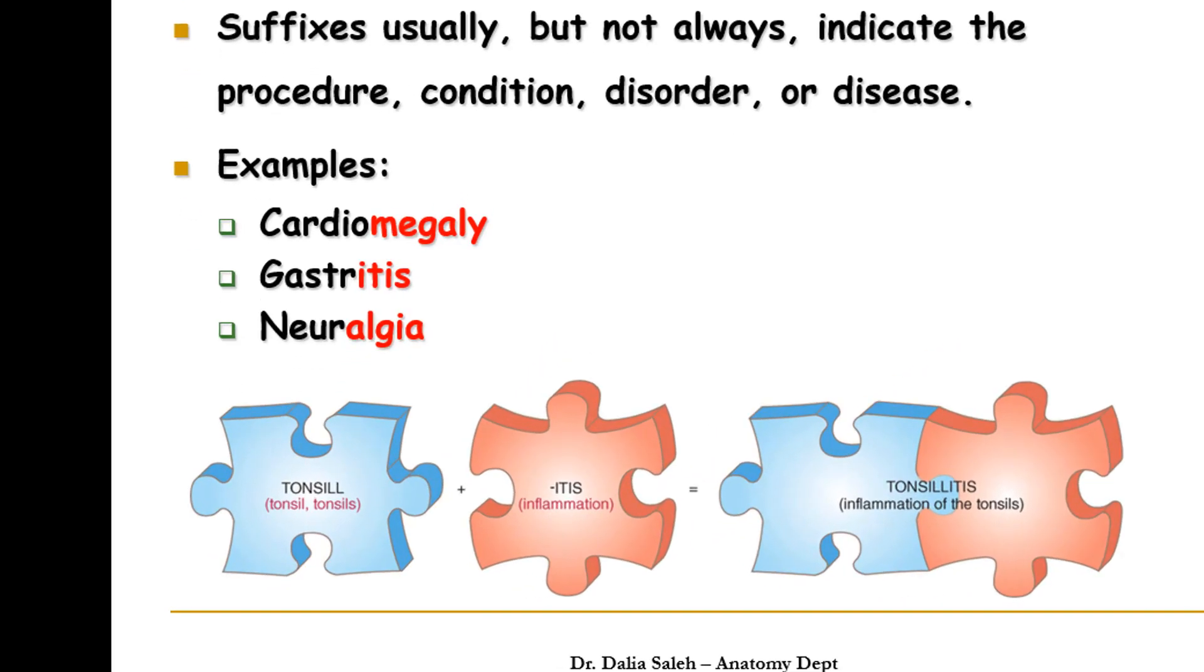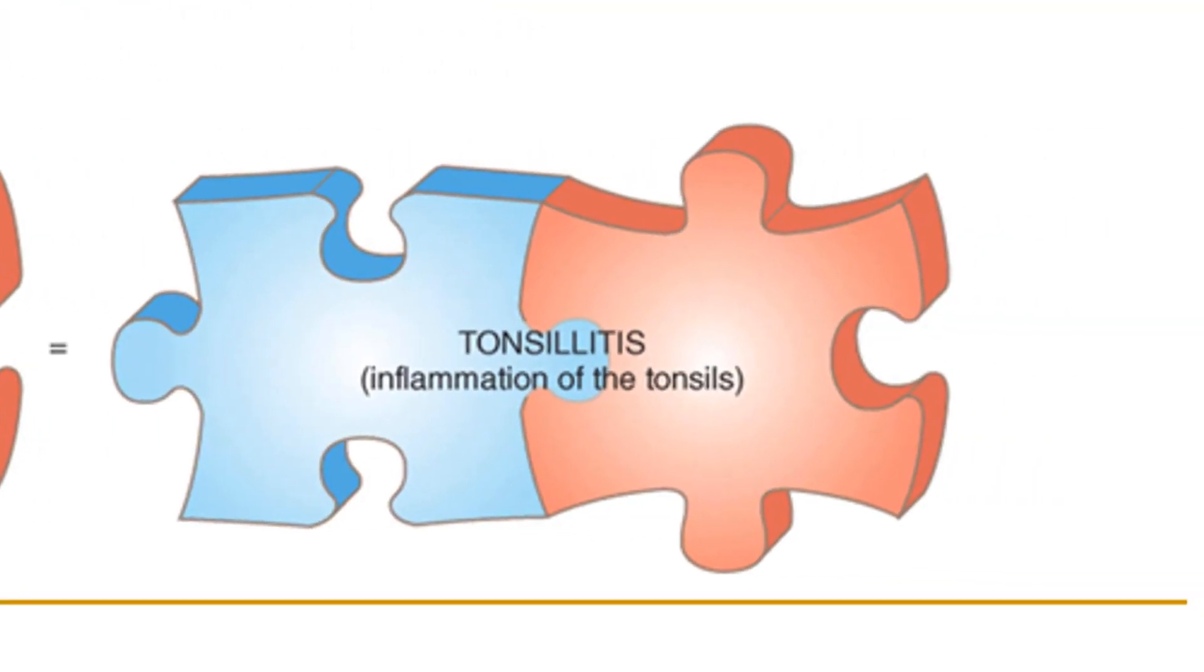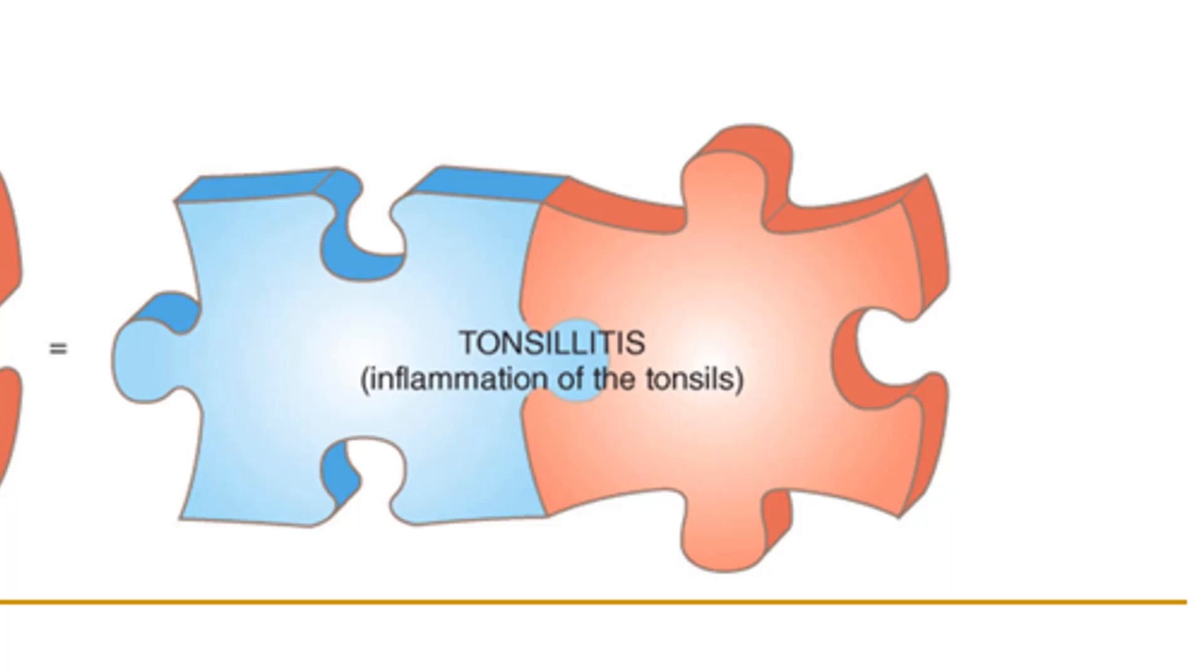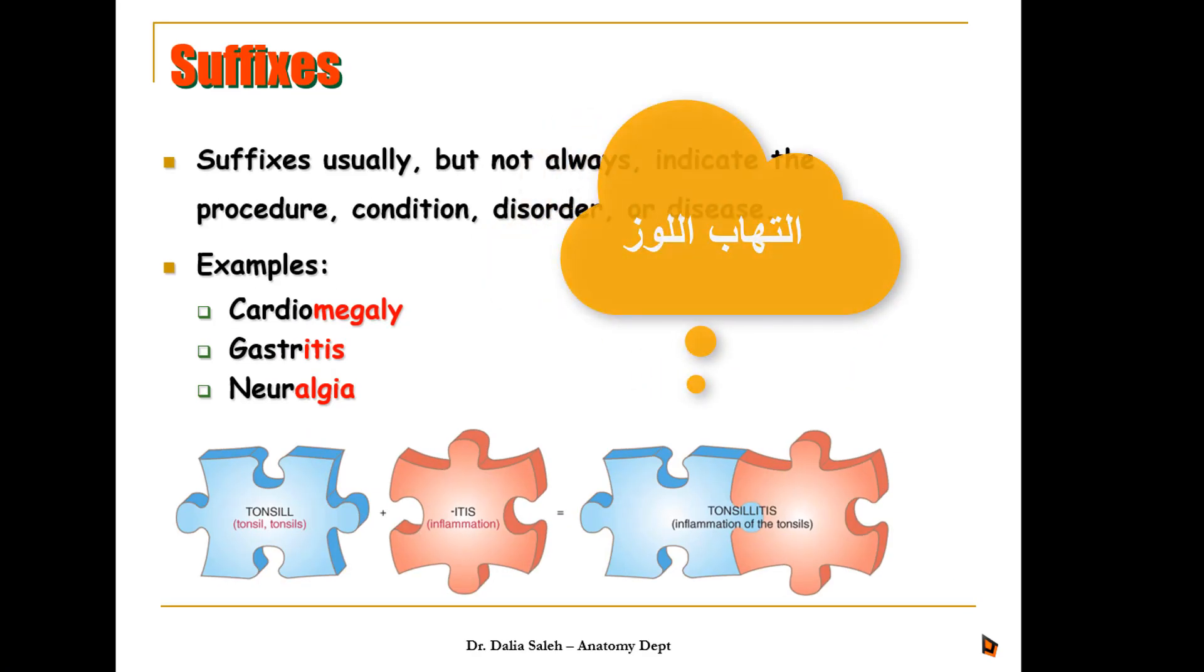In this example, again, tonsillitis. Tonsil is the root, which means this lymphoid organ that is present in our throat. And itis is a suffix meaning inflammation. So by combining the root tonsil with the suffix itis, we end up with tonsillitis, which means inflammation of the tonsil.